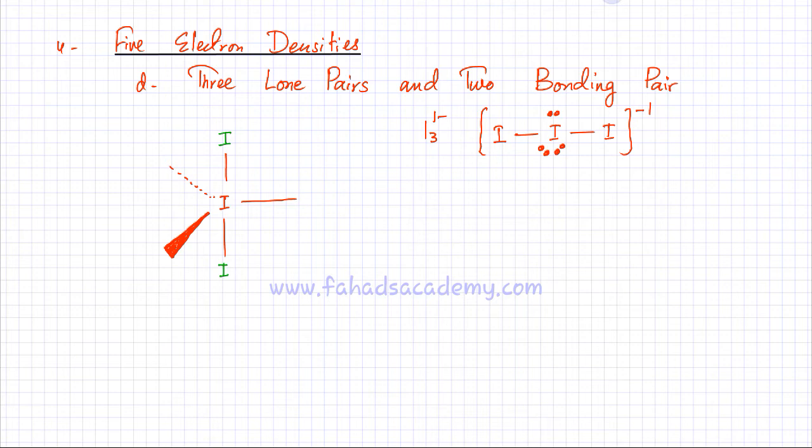There are going to be three lone pairs. These electron densities over here would be lone pairs of electrons. So I'm going to rub them off one by one. Get rid of this bond and instead put a lone pair on this side. Get rid of this other electron density and put a lone pair on that side as well. Remove this bond and put a lone pair on that side.